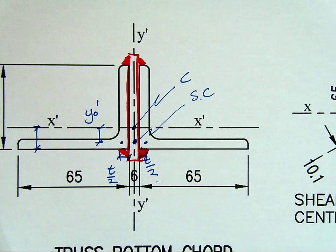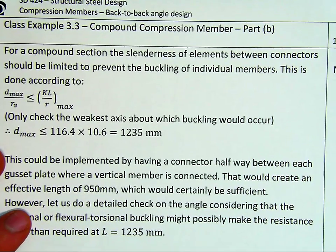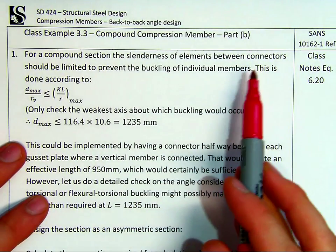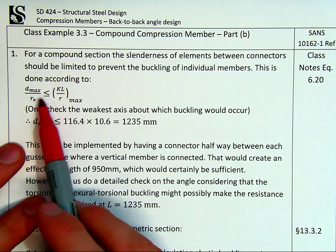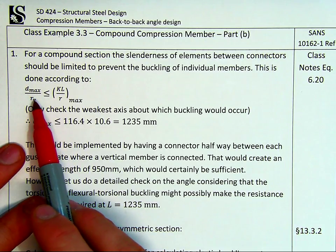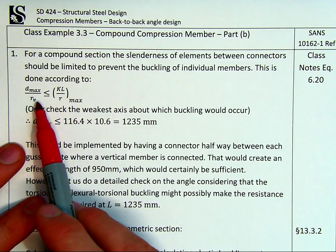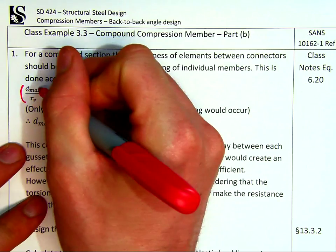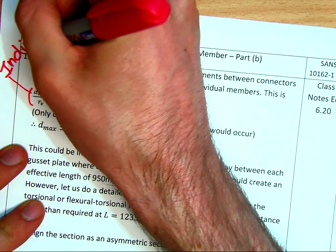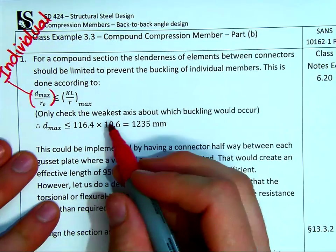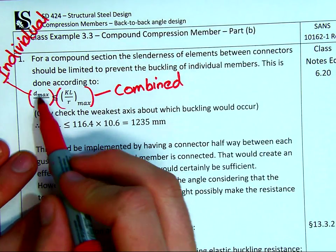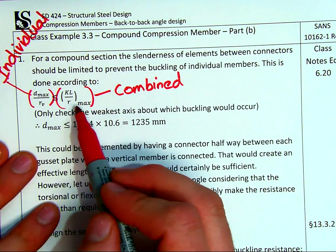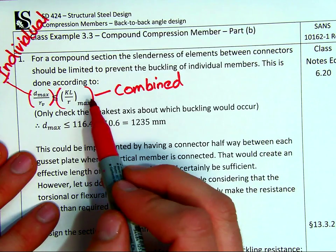So what we need to do, there's quite a quick and easy check just to make sure that it behaves as we expected. And that is, for compound section, the slenderness of elements between connectors should be limited to prevent the buckling of individual members. λ_max is the spacing between connectors over the minimum radius of gyration. So that's what will govern the capacity of our individual. So this is the individual section. And this part over here is the combined. And what we want to make sure is that the weakest axis of our individual section is the same as the weakest axis of our global system.